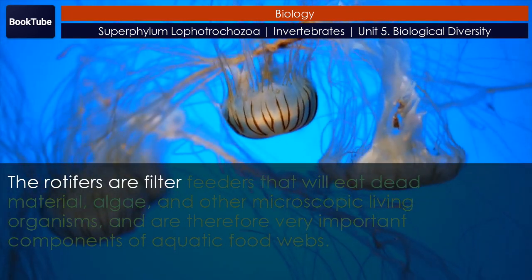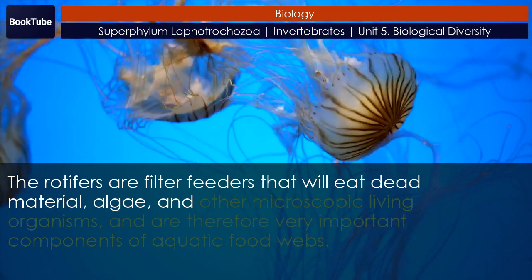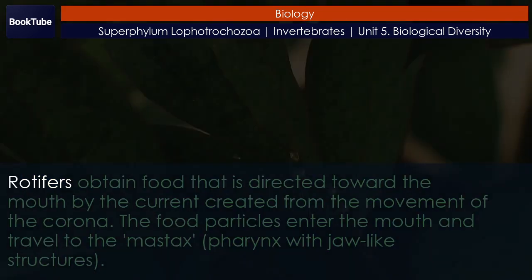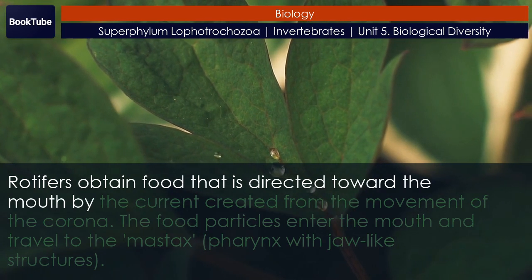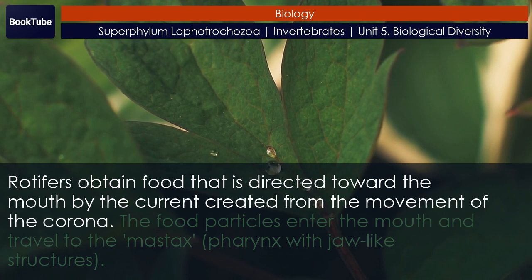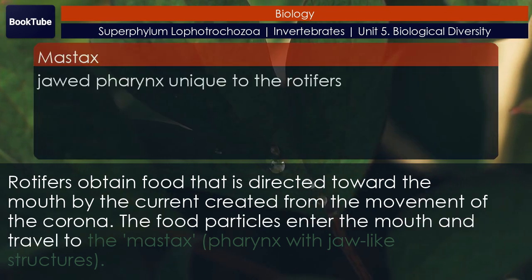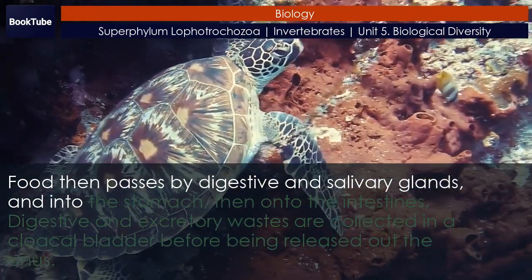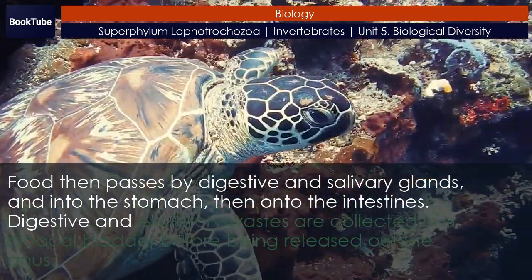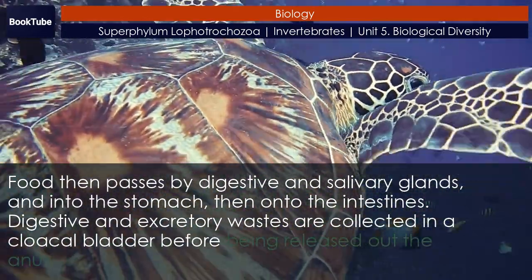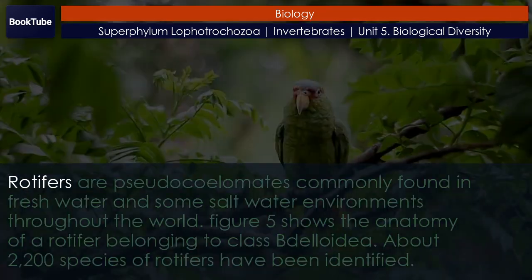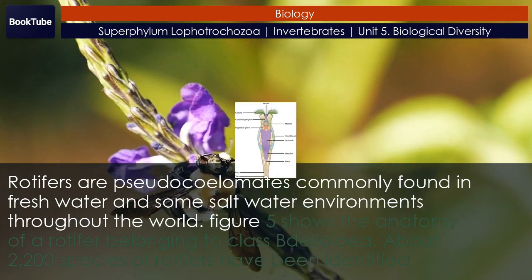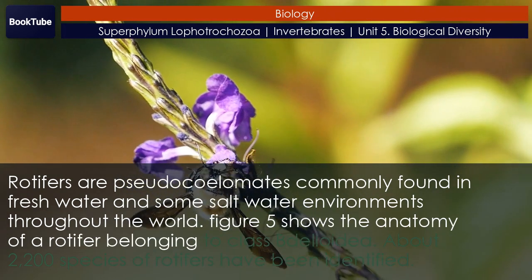Rotifers are typically free-swimming and truly planktonic organisms, but extensions of the foot can secrete a sticky material forming a holdfast to help them adhere to surfaces. The head contains sensory organs in the form of a bilobed brain and small eyespots near the corona. Rotifers are filter feeders that eat dead material, algae, and other microscopic living organisms, and are therefore very important components of aquatic food webs. Food directed toward the mouth by the current created from movement of the corona enters the mouth and travels to the mastax — a pharynx with jaw-like structures. Food then passes by digestive and salivary glands and into the stomach, then onto the intestines. Digestive and excretory wastes are collected in a cloacal bladder before being released out the anus.